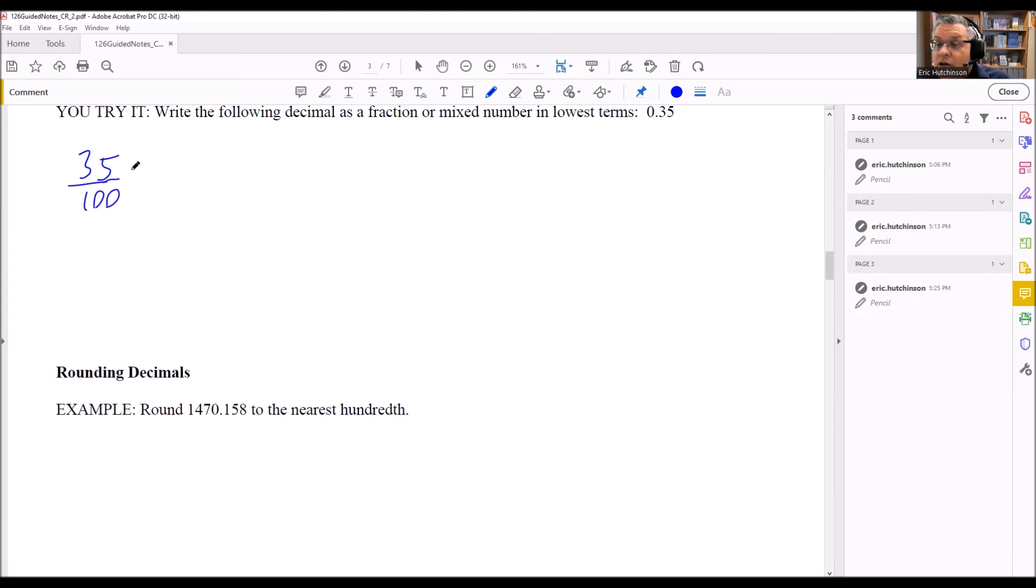So now I want to write this in lowest terms. For 35, the factors would be 1, and it would just be 1, 5, 7, and 35. There's not anything else that will really work here for that. That's the only factors.